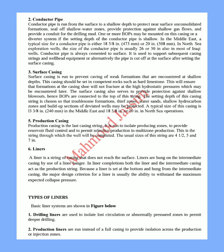4. Production Casing. Production casing is the last casing string. It is run to isolate producing zones, to provide reservoir fluid control and to permit selective production in multi-zone production. This is the string through which the well will be completed. The usual sizes of this string are 4 and 1/2, 5, and 7 inches. 5. Liners. A liner is a string of casing that does not reach the surface. Liners are hung on the intermediate casing by use of a liner hanger. In liner completions, both the liner and the intermediate casing act as the production string. Because a liner is set at the bottom and hung from the intermediate casing, the major design criterion for a liner is usually the ability to withstand the maximum expected collapse pressure.